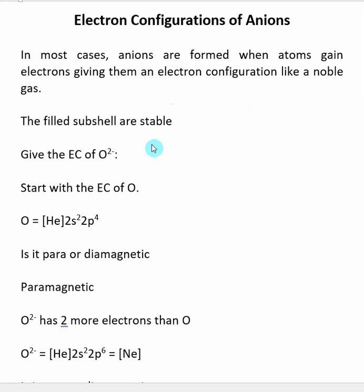They're going to do this because noble gases have filled subshells, and these filled subshells are stable. In most cases, we're filling P subshells. Typically, we're dealing with non-metals in the upper right-hand corner of the periodic table. They tend to be the ones to gain electrons to become anions.